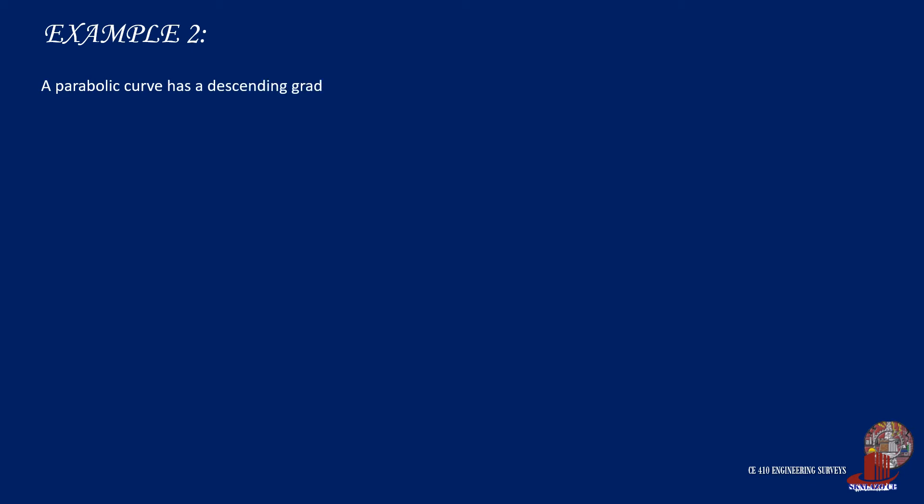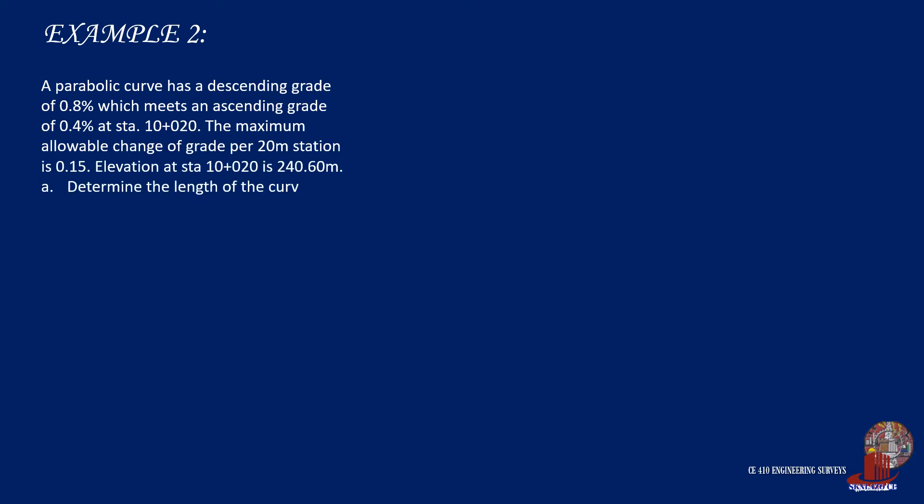Example 2. A parabolic curve has a descending grade of 0.8%, which meets an ascending grade of 0.4% at station 10+20. The maximum allowable change of grade per 20 meter station is 0.15. Elevation at station 10+20 is 240.6 meters.